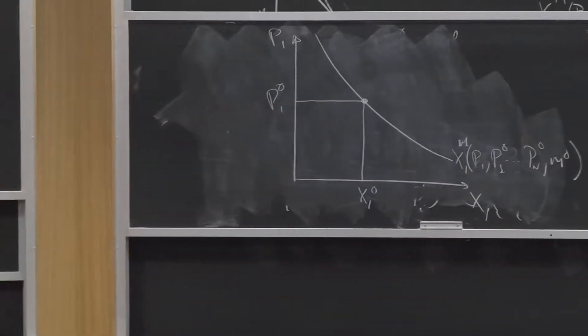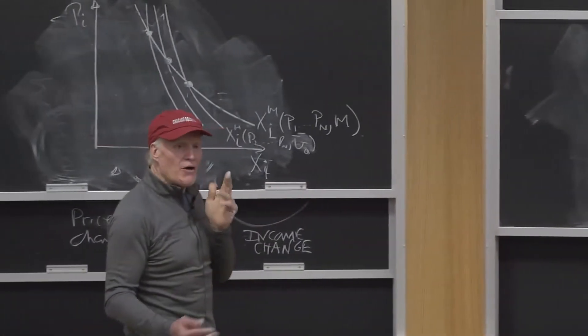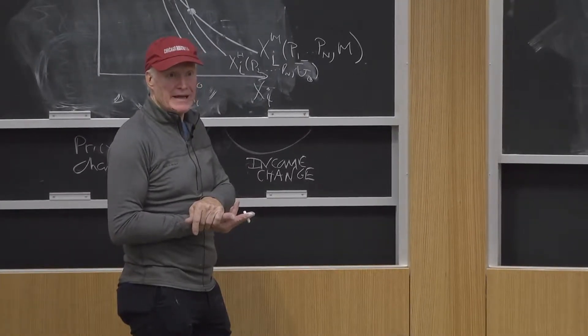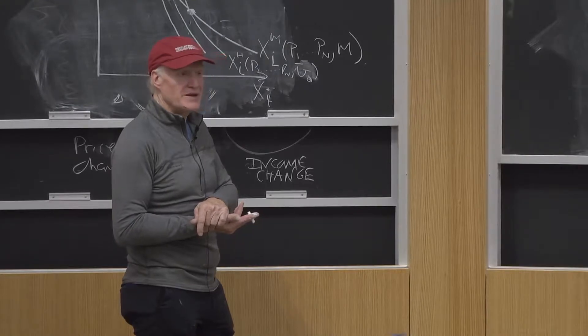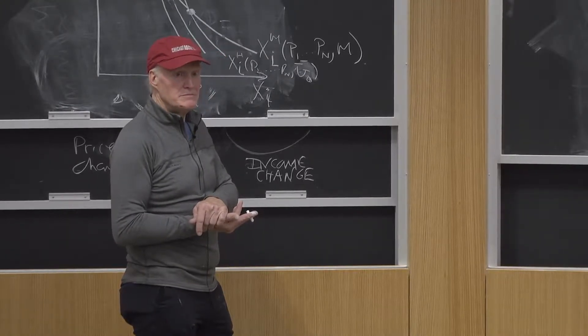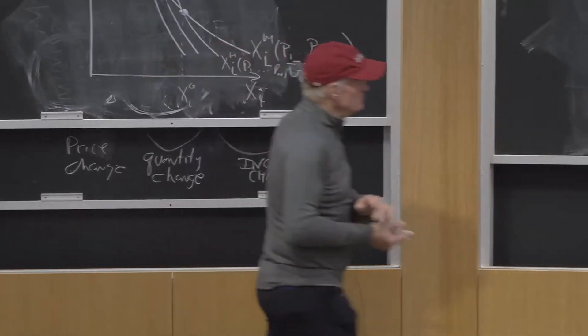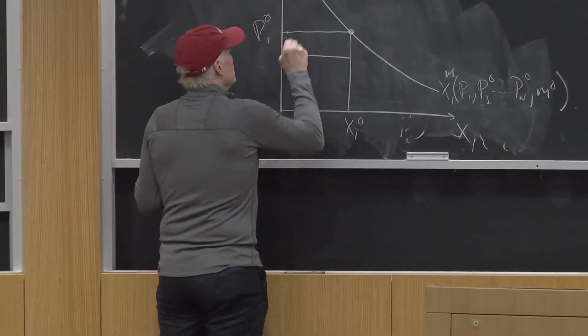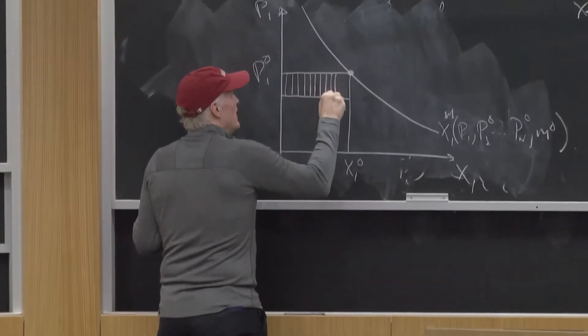So when the price of good one goes down, how much of an increase in real income do I get? How much would my price index say my real income went up? Well, my price index actually corresponds to measuring my increase in real income by that area there.